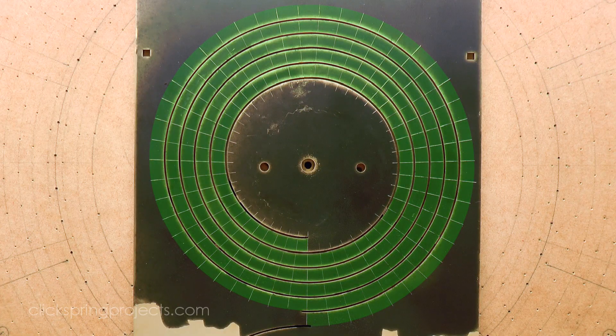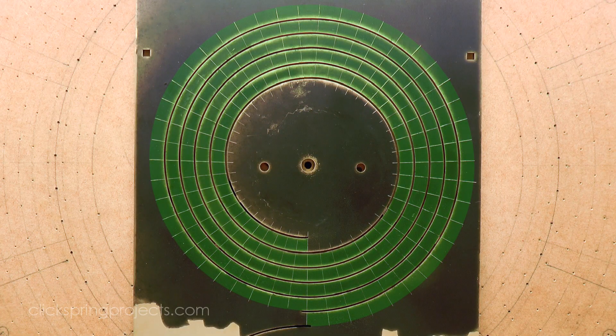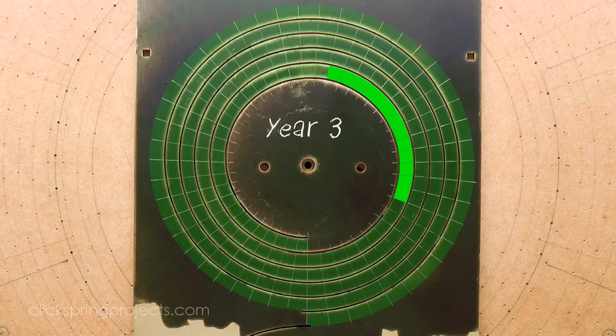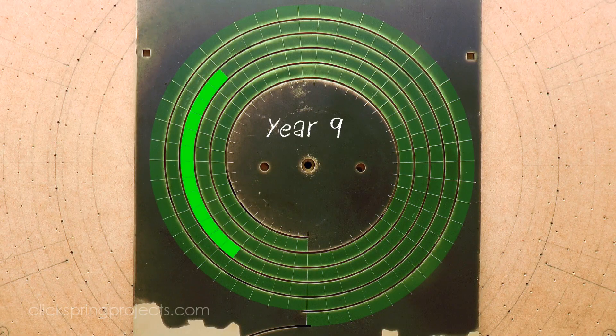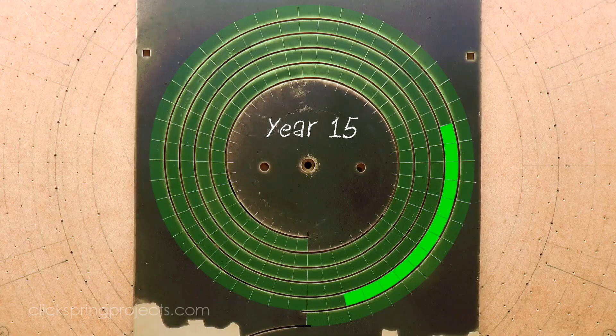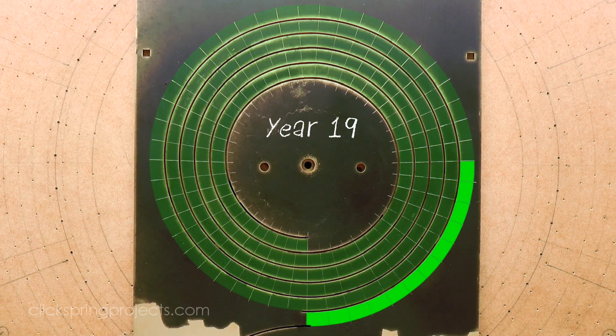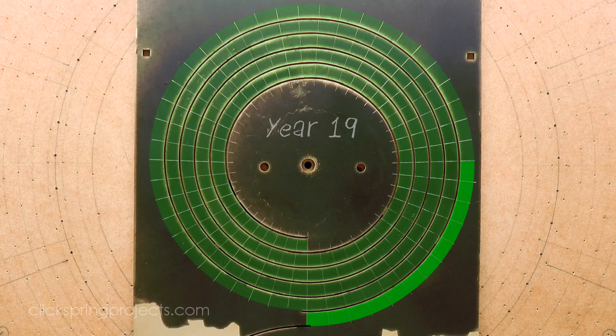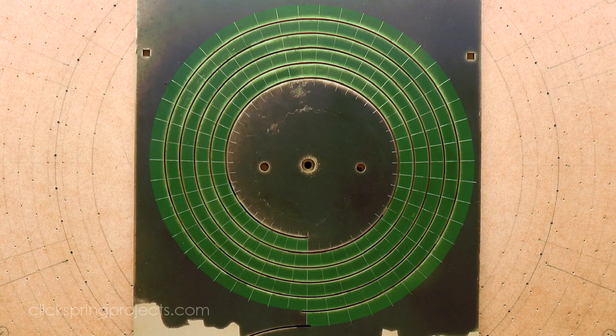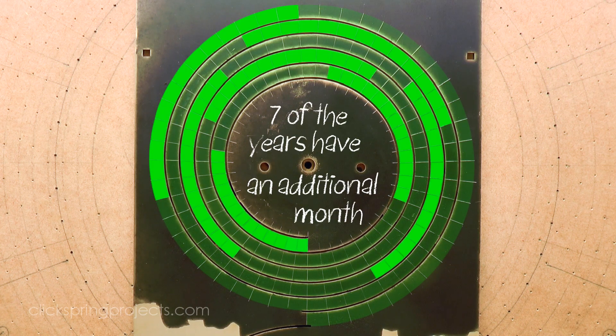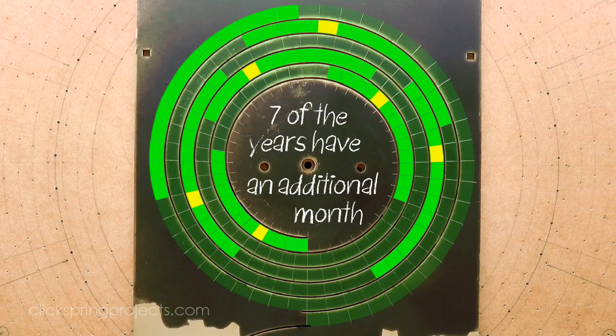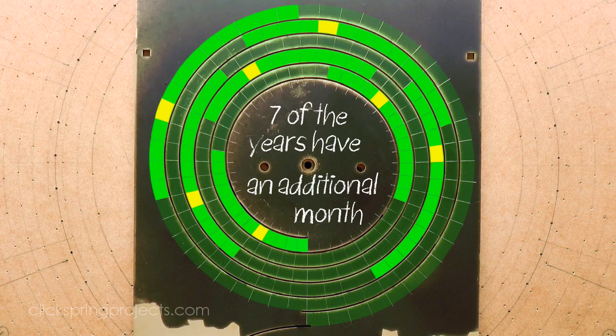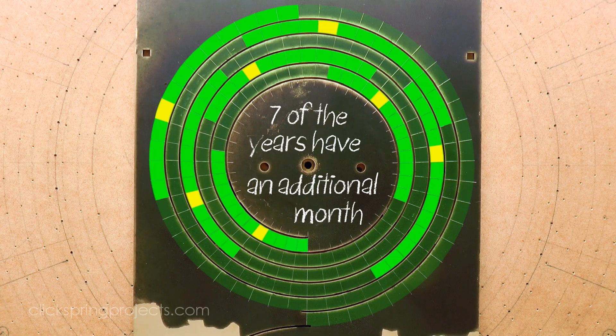Years were presented in sequence from 1 to 19 around the spiral. Seven of the years were intercalary years, and so 13 months in duration. And it's believed that these intercalary years were spread out relatively evenly across the sequence of 19.